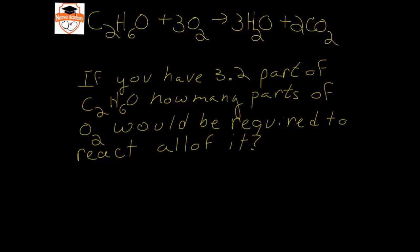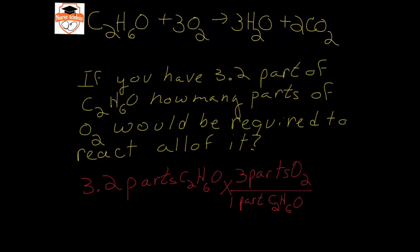This is exactly the same type of math. So the first thing I would do would be to write my information that I have: 3.2 parts of ethanol times, I'm trying to get oxygen so 3 parts O2 over 1 part C2H6O. 3.2 times 3 is 9.6 parts of O2 required, so here would be our answer.